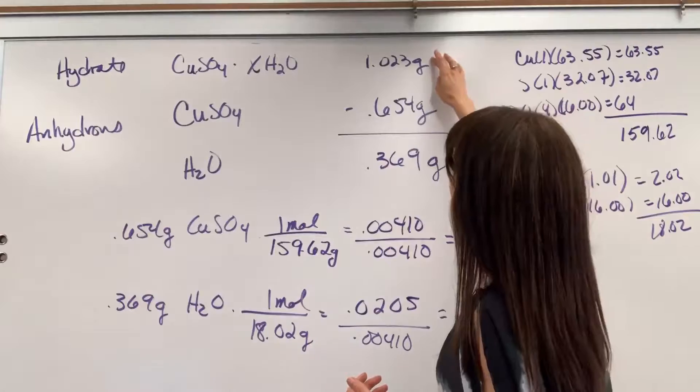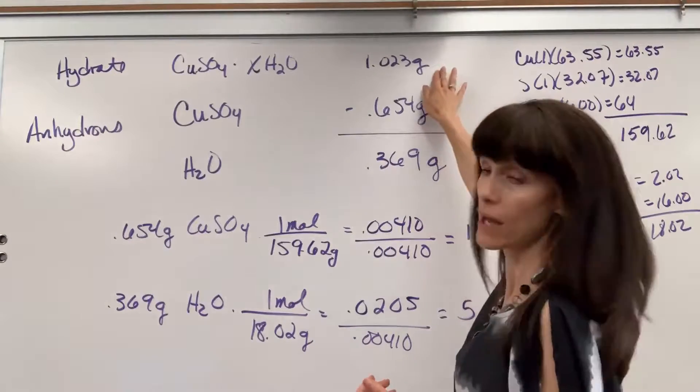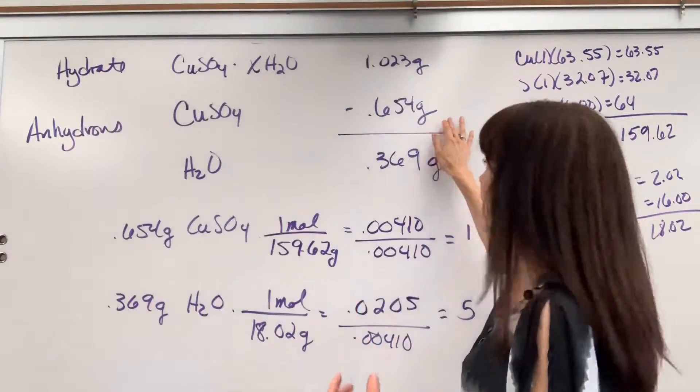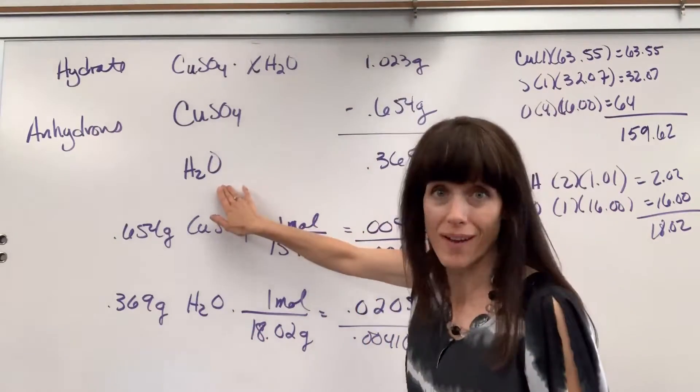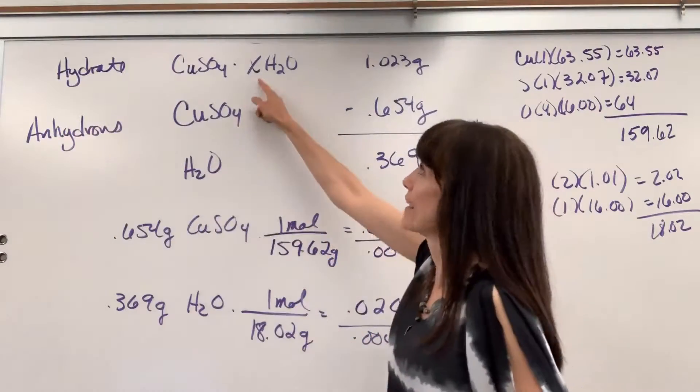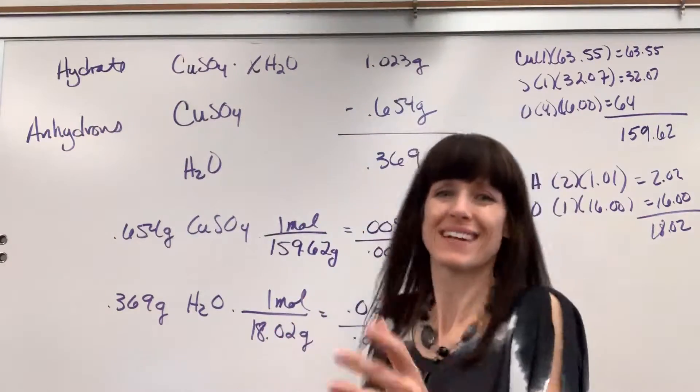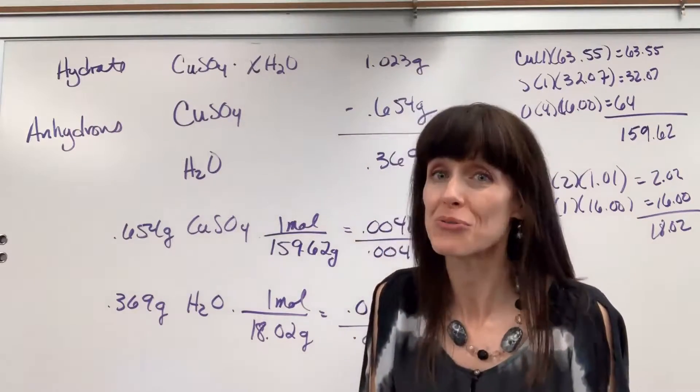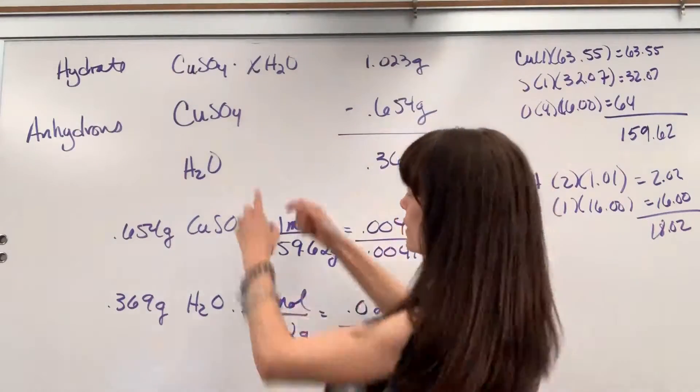Now if you subtract the amount you began with - copper 2 sulfate hydrate - from the anhydrous copper 2 sulfate, the difference is the water. The water that escaped, that's gone. Now to find this - this is the cool chemistry part - is really just empirical formula. Check it out.